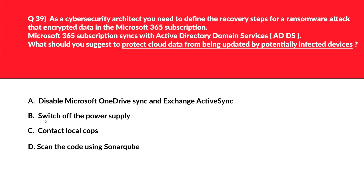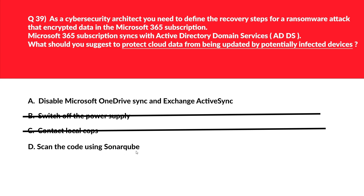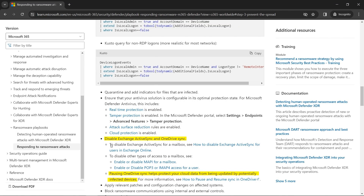The next question's key point is to stop the spread of data encryption by ransomware. Option B — switch off the power supply — cannot protect cloud data, so B is out. Option C — contact local law enforcement — is unrelated to the technical issue, so C is out. Option D — scan the code using SonarQube — doesn't apply since there is no mention of static code analysis in the question, so D is out.